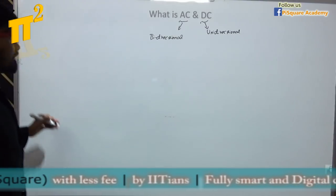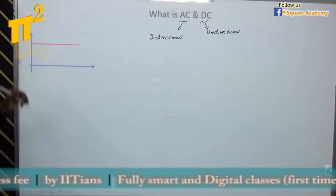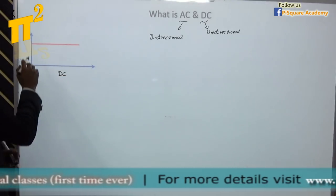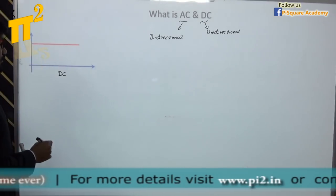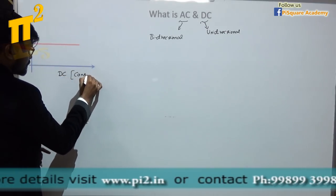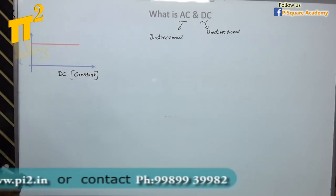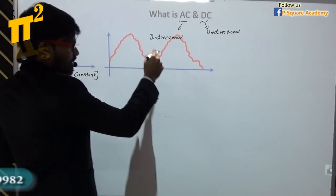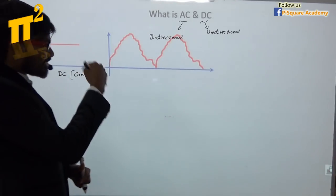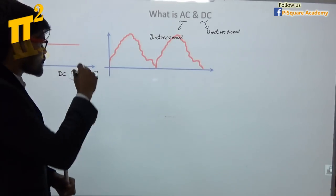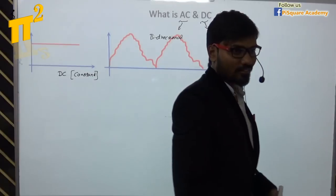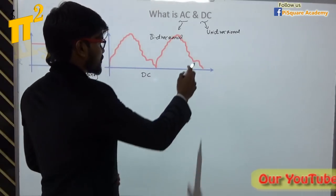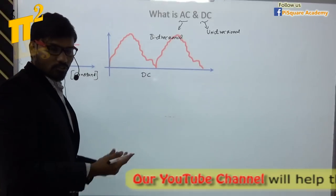So let's look at some of the signals and see whether they are unidirectional or bidirectional. Tell me, is this AC or DC? It is DC because it is having only one direction, and of course the magnitude is constant — it is a DC with constant magnitude. Next, this one — AC or DC? Is it alternating in direction? No, it is only having positive direction, so it is unidirectional. So it is also a DC.